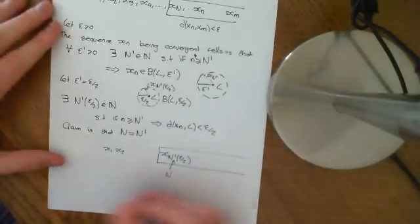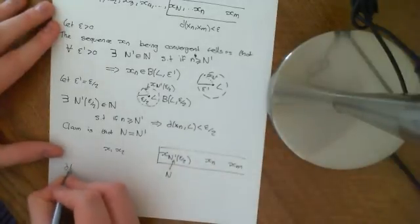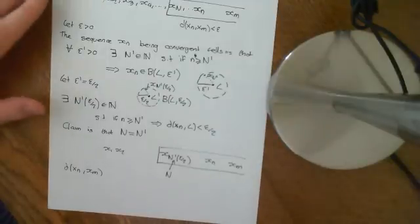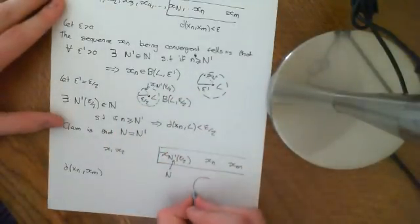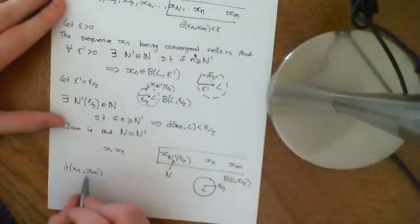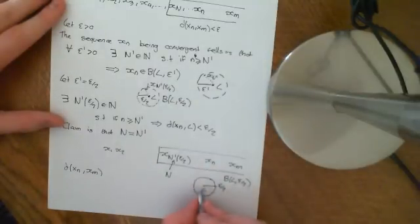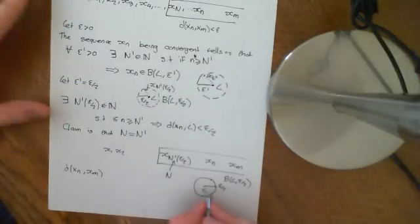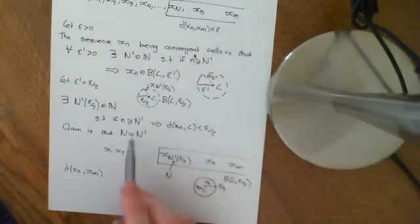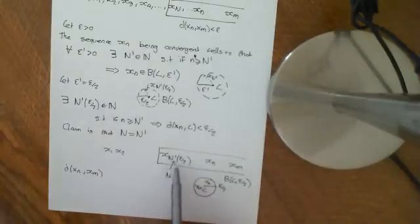So why is that? If I pick x_n and x_m and want to show their distance is less than epsilon — intuitively, both points lie within this open ball around L of radius epsilon over 2. The diameter of this ball is epsilon. So every two points within this ball have distance at most epsilon from each other. Let me draw this: we have limit L at the centre, and x_n and x_m both inside the open ball of radius epsilon over 2.